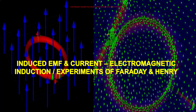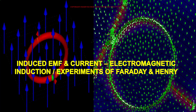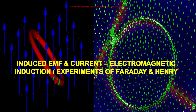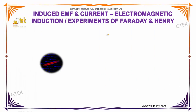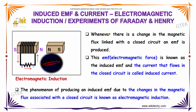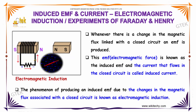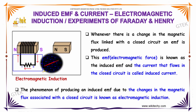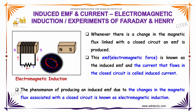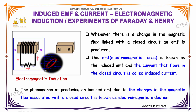We will talk about the induced EMF and current with the magnetic induction and experiments of Faraday-Henry. Whenever there is a change in the magnetic flux linked with a closed circuit, an EMF is induced or produced. This EMF is considered as induced EMF, and the current that flows in the closed circuit is called induced current. The phenomenon of producing an induced EMF due to changes in the magnetic flux associated with a closed circuit is referred to as magnetic induction.